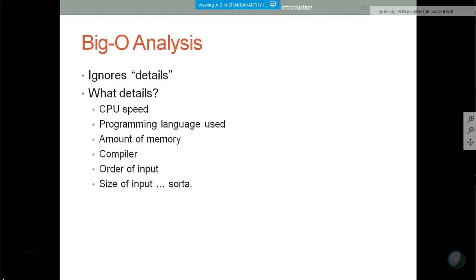Sorry guys for the interruption there. I usually do my classes sitting in the garage. But today there is a lot of activity in the garage. All items are coming and things like that. My apologies. So, what are the details that we ignore? We ignore CPU speeds. I ignore programming language. How much memory. Compilers. Order of input. Size of input is very important. So, we ignore those things to quickly arrive at saying that, which algorithm is better?